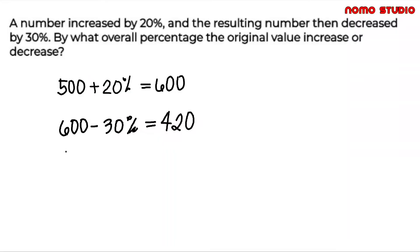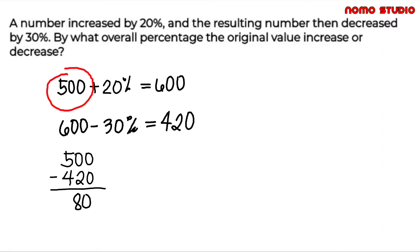So we have 500 minus 420, which is equal to 80. Then let's divide the result by the original value, which is 500. So 80 divided by 500, and that is equal to 0.16.